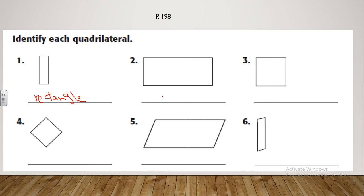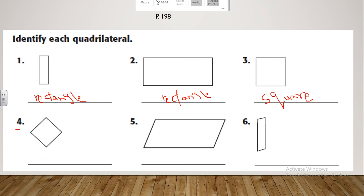The second one is a rectangle too. What about number three? Can you tell me? That's a square. What about number four? What's the name of number four? It's a rhombus. And what about number five? It's a parallelogram.